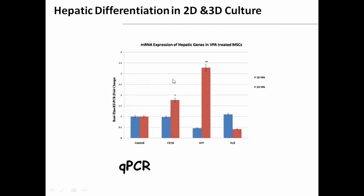After treatment of MSCs with 5 millimolar VPA, we performed qPCR and analyzed hepatic-specific genes CK18, alpha-fetoprotein, and albumin in 2D and 3D culture. We obtained higher expression of all hepatic genes — CK18, AFP, and ALP. However, the 3D culture showed greater upregulation of the hepatic genes.